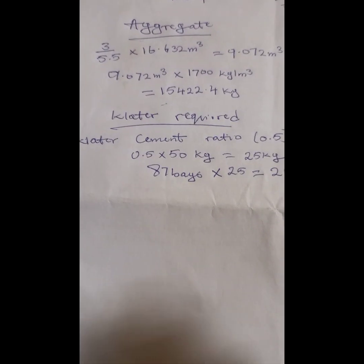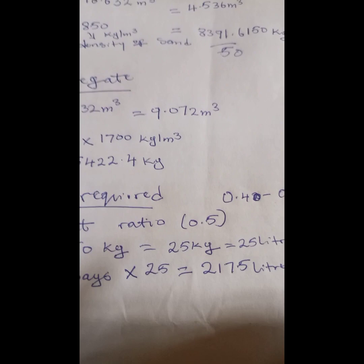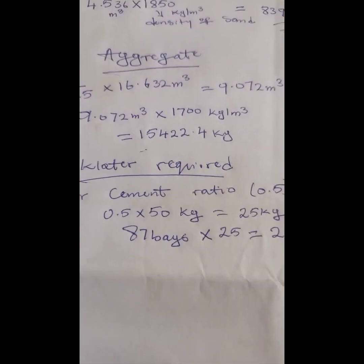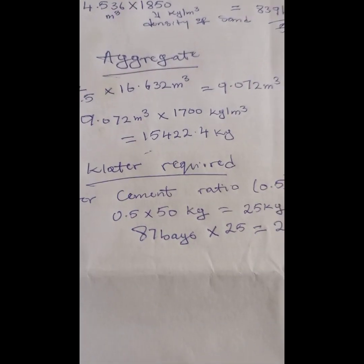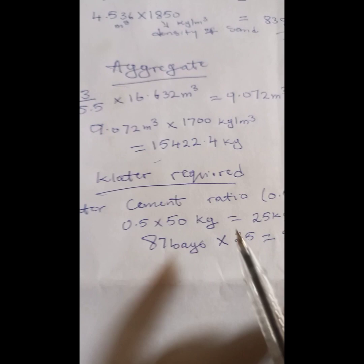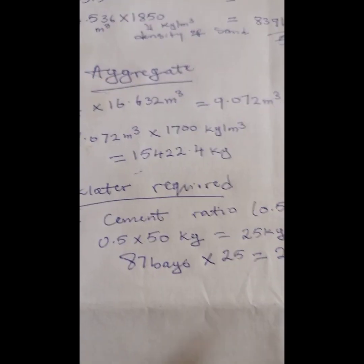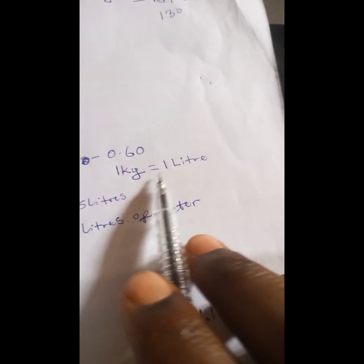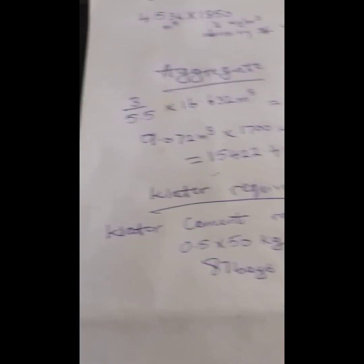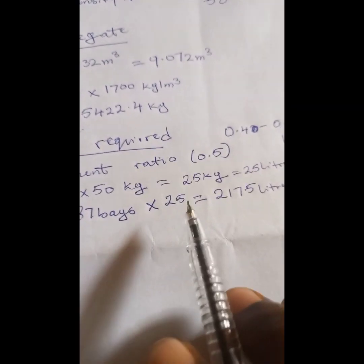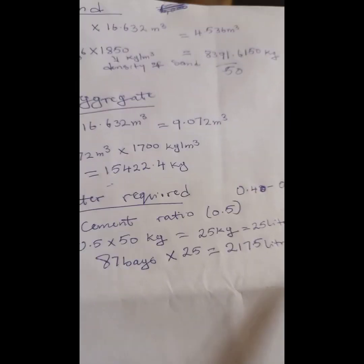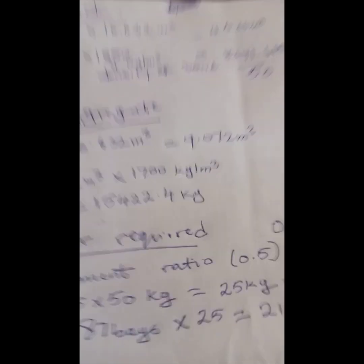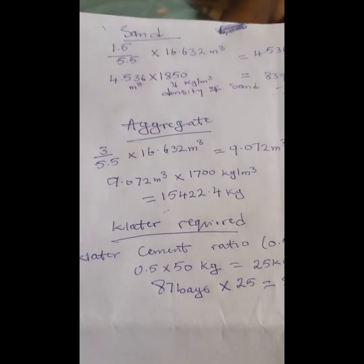For water, the water-cement ratio ranges from 0.4 to 0.6. We adopt 0.5. Since a bag of cement is 50 kg, 0.5 times 50 gives 25 kg, and 1 kg equals 1 liter. With 87 bags of cement, multiply 87 by 25 to get 2175 liters of water required to mix this concrete.